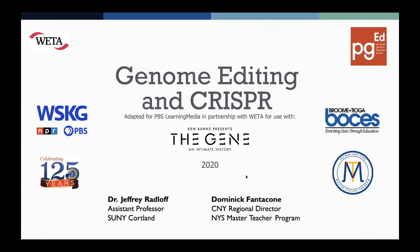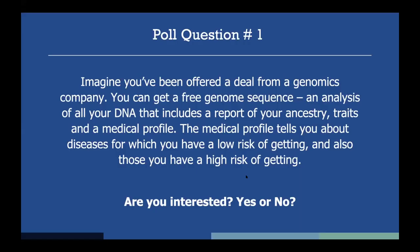We are going to start right off with a couple of poll questions. The first poll question says: Imagine you've been offered a deal from a genomics company. You can get a free genome sequence — an analysis of all your DNA that includes a report of your ancestry, traits, and a medical profile. The medical profile tells you about diseases for which you have a low risk and those you have a high risk of getting. So are you interested in finding out? Go ahead and click yes or no.